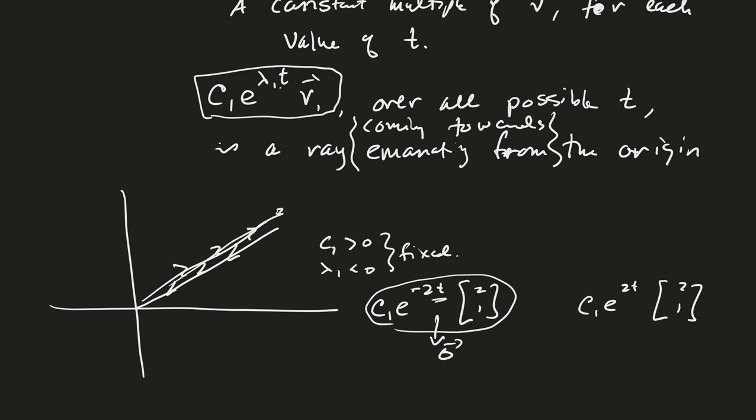And, of course, this is where C1 is positive. If C1 were a negative number, in either case, I would have either been coming into the origin along that or moving away. So whenever we see these vectors like this, we should be thinking of rays either coming towards the origin or away from the origin.